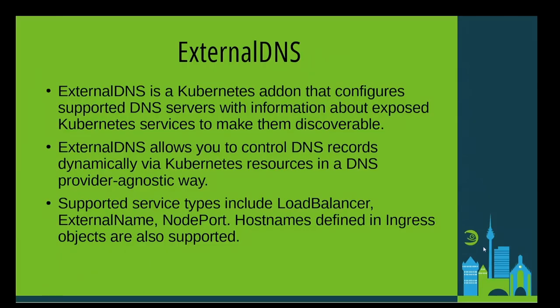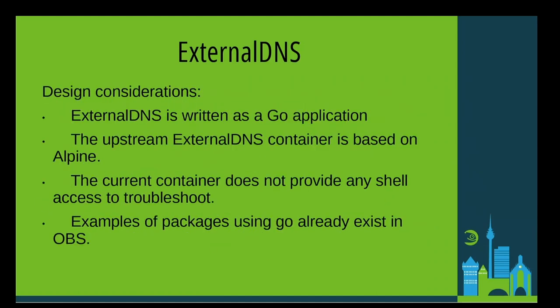External DNS is a Kubernetes add-on that allows the creation of dynamic host names from Kubernetes Ingress objects and certain service types. It supports integration with a wide variety of DNS providers and servers. External DNS is a Go-based application. The upstream version of the external DNS container is based on Alpine Linux. That container has shell access disabled, which disables any troubleshooting other than the console logs — for example, ensuring it can connect to the configured DNS server it is using to create DNS records.